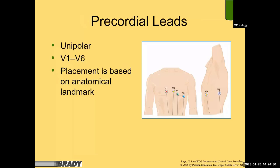Precordial leads are unipolar — they only look one way, looking in. While limb leads look on a vertical axis, precordial leads look on a horizontal axis and look directly into the chest. There are V1 through V6, and placement is based on anatomical landmarks.